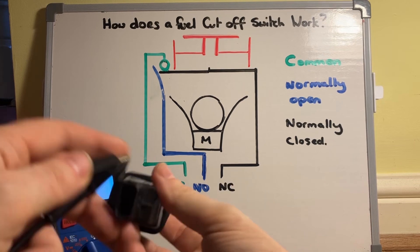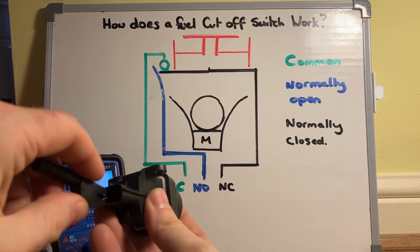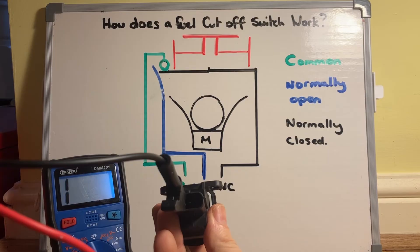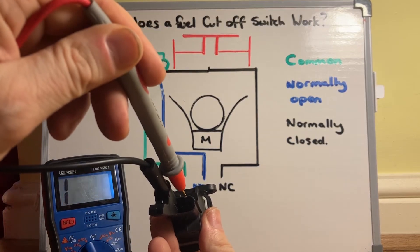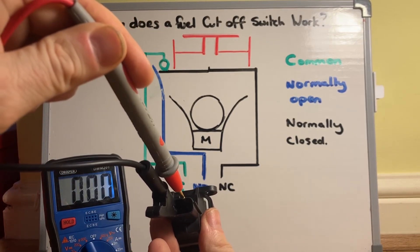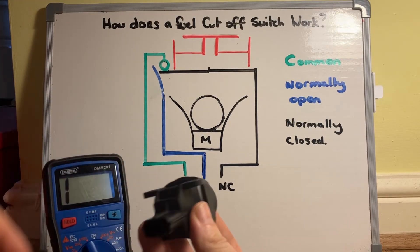I'll put my crocodile clip onto common, and because it's normal driving conditions it should be running on the normally closed circuit. So there we go, I'm getting a buzz to say that's running as normal or working as normal.